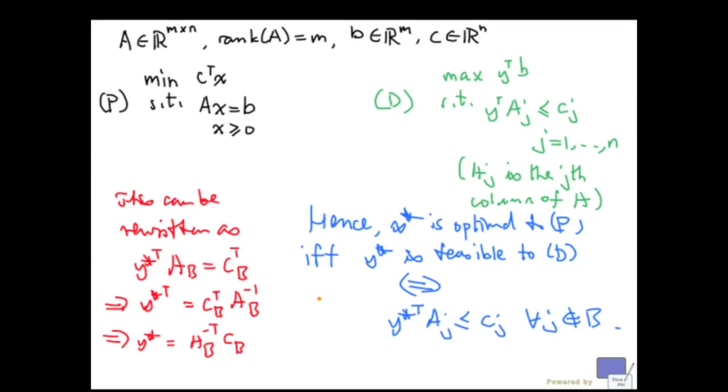So to summarize, in order to determine whether x star is optimal to p, where x star is a basic feasible solution whose basic variables are all positive. First, you solve for y star by computing this. And then you plug in to these inequalities and check. If all these inequalities are satisfied, then you know that x star is optimal. Otherwise, x star is not optimal. We'll find a way to handle the case when not all basic variables are positive in a later video.